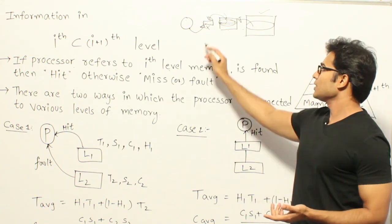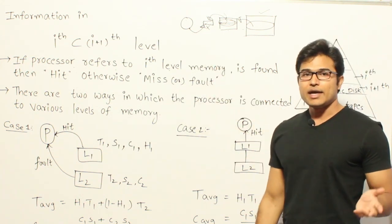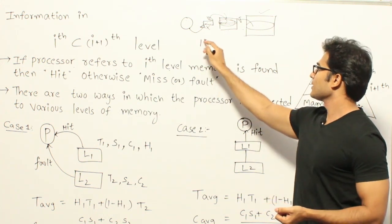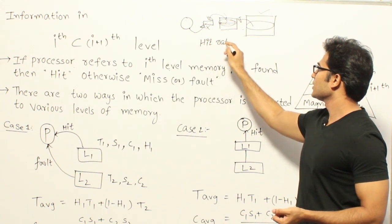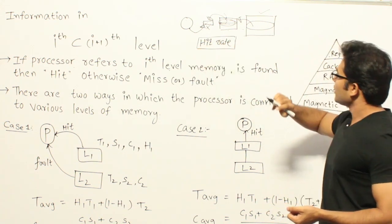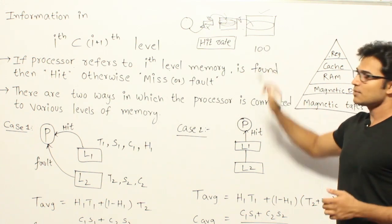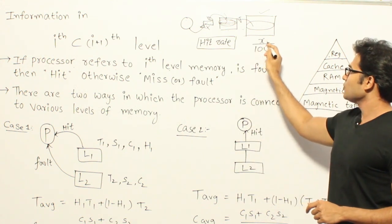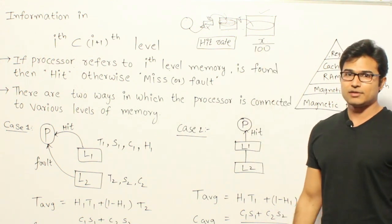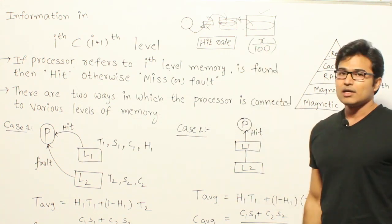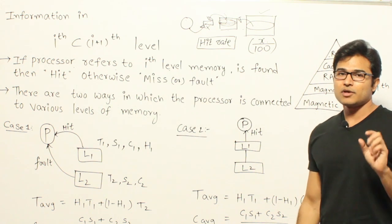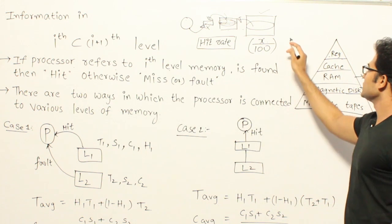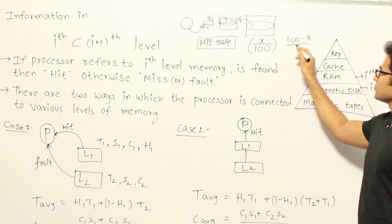We will also talk about hit rate or hit ratio and miss rate or miss ratio. The hit rate is: if you ask for a word 100 times in a level, how many times are you able to find it in that level? That is called the hit rate. The miss rate is: if you ask 100 times for an item in a level, how many times is it not present? Which is nothing but (100 minus x) by 100.